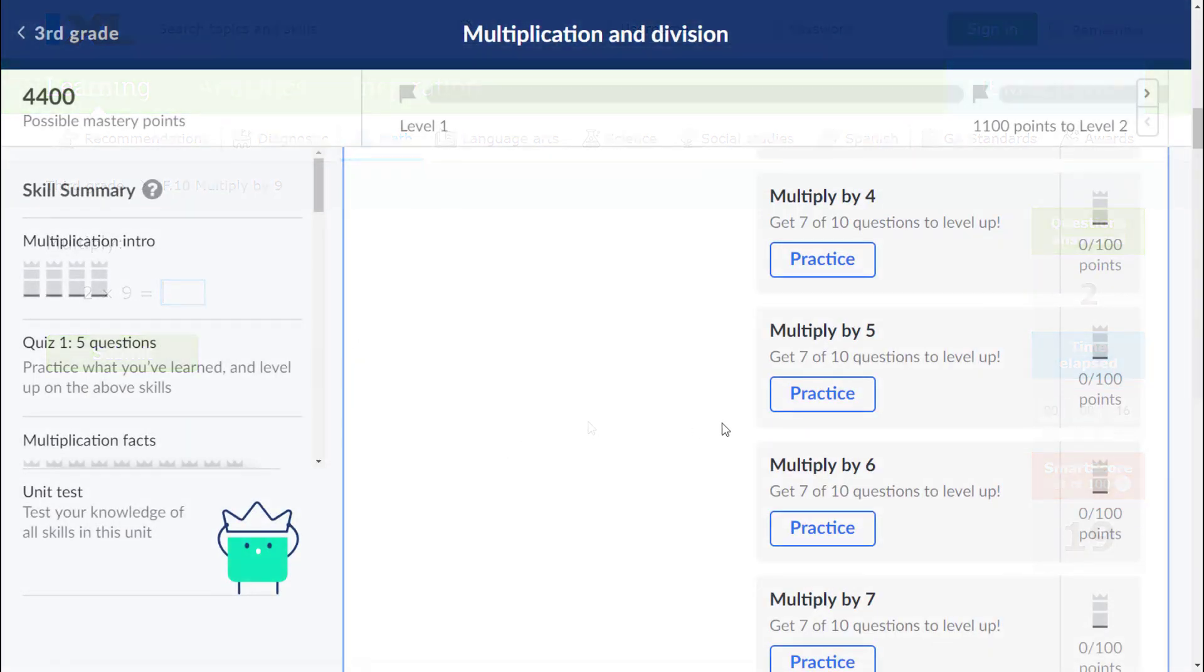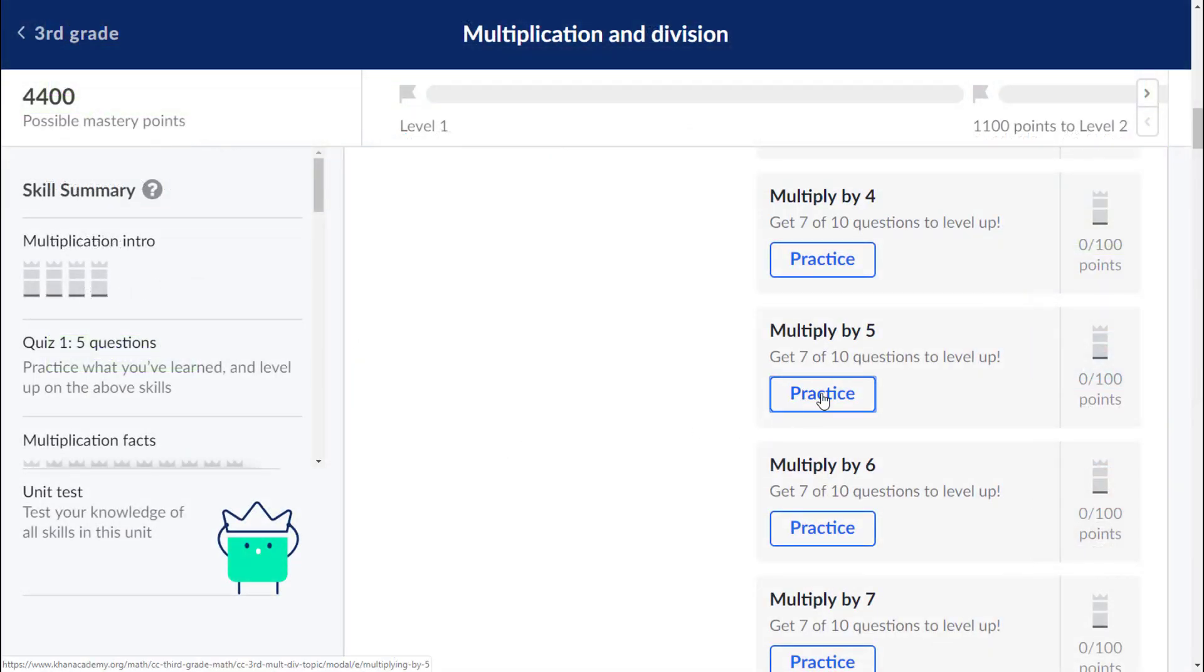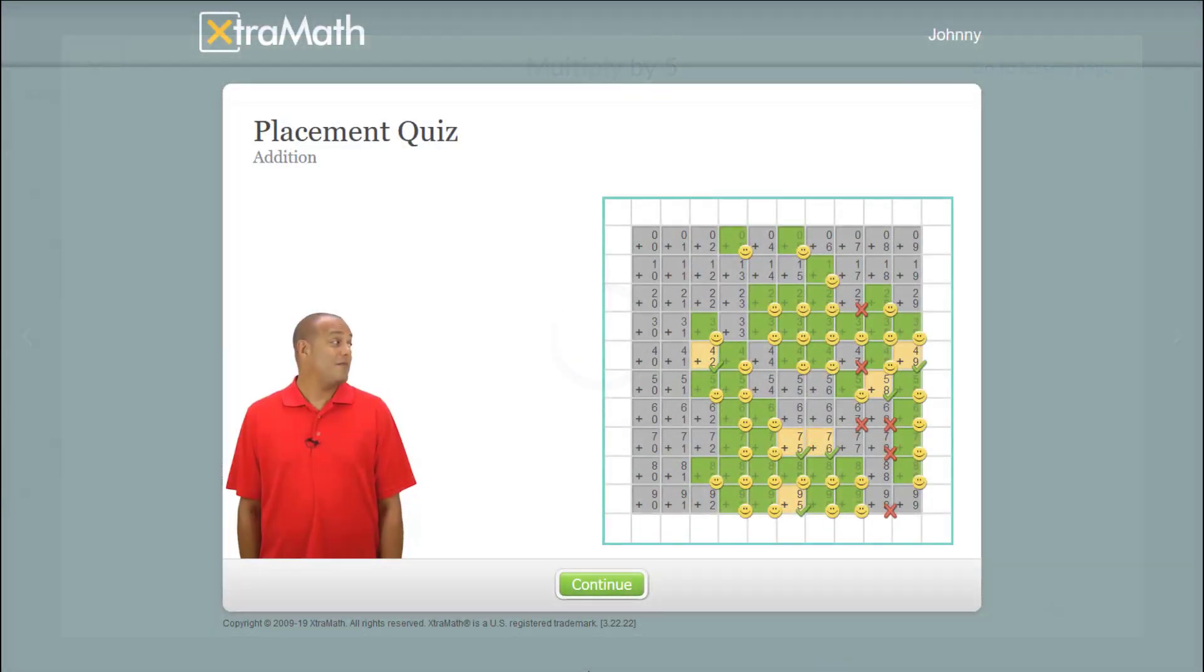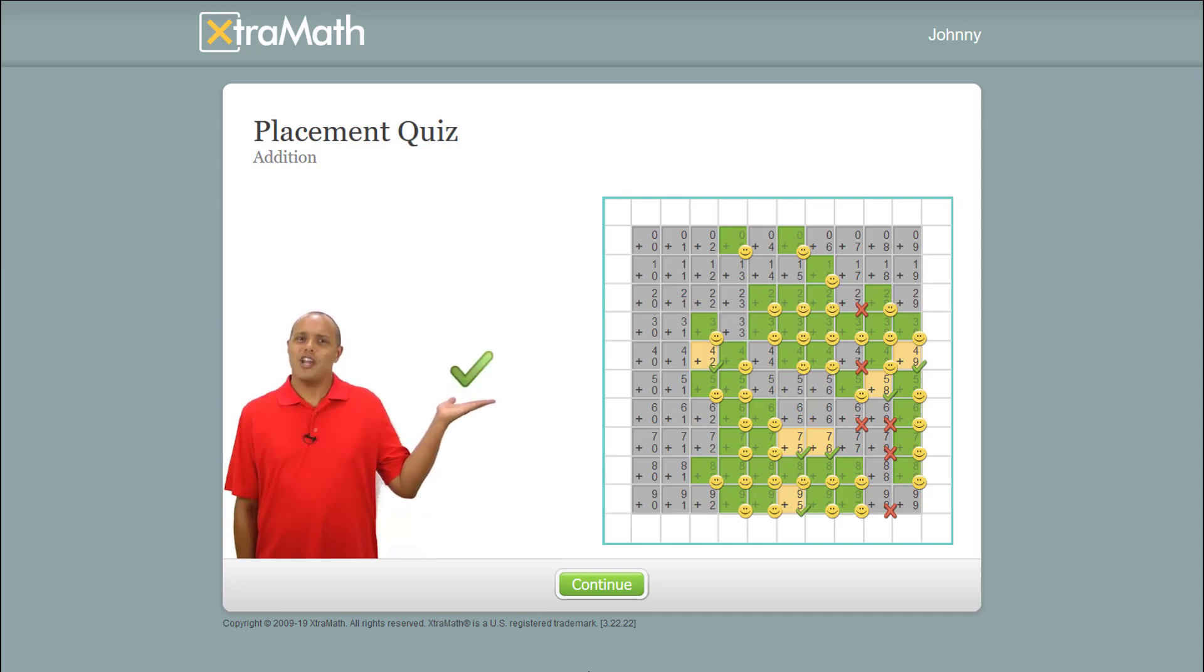Instead of evaluation, students need more efficient and effective strategies for memorization. Simply identifying that a student needs to memorize how to add by eight or multiply by nine won't alone help them learn how to do so.